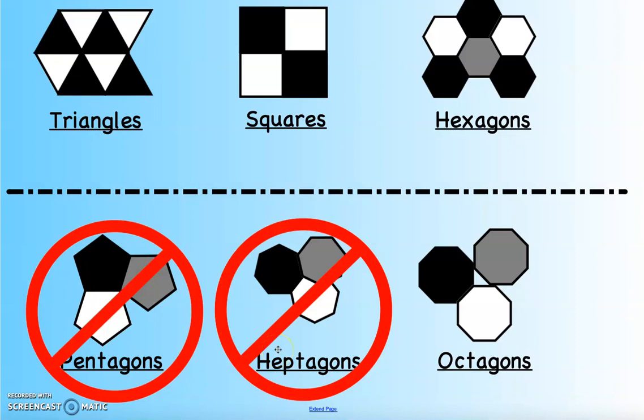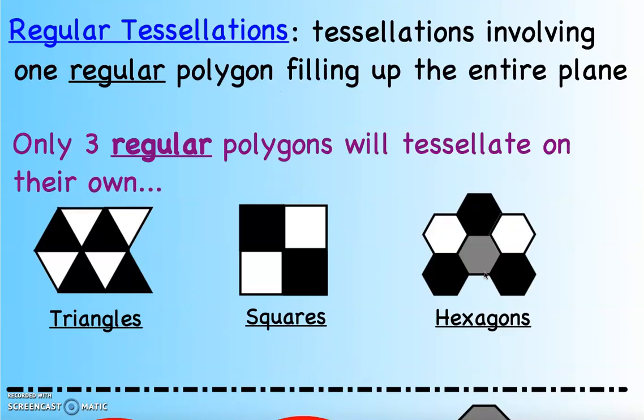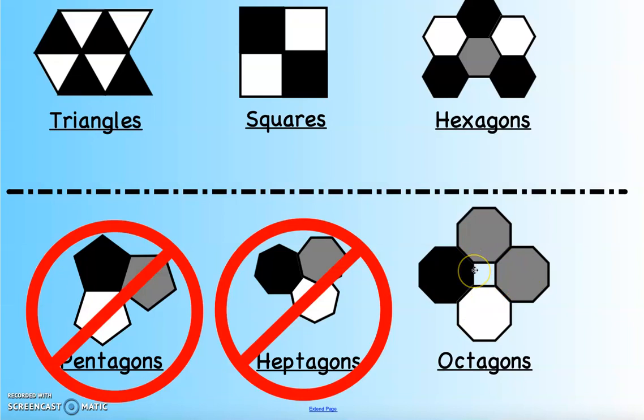Octagons, eight-sided figures. Well, look at this. There's a hole there. And you might say, let's move this octagon up here. And maybe let's copy that octagon and make it fit here. Octagons don't tessellate on their own. But you'll notice that octagons will tessellate if I combine them with a square. But that's not a regular tessellation where we use one polygon. That involves more than one regular polygon. And we'll get to that later on.